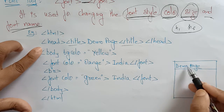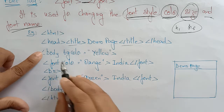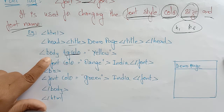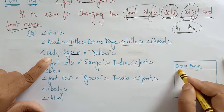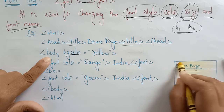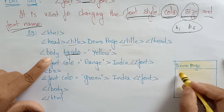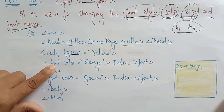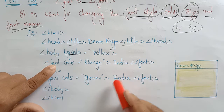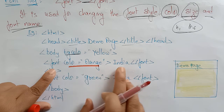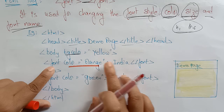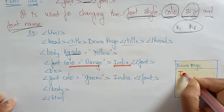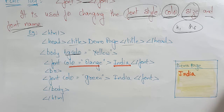Let's see the example. Inside the HTML head I have a title 'Demo Page'. In the body, the attribute bgcolor is set to yellow, so the complete web page background appears in yellow. Then a font tag with color set to orange — whatever message is written between the font open and close, in this case 'India,' will be printed in orange color.